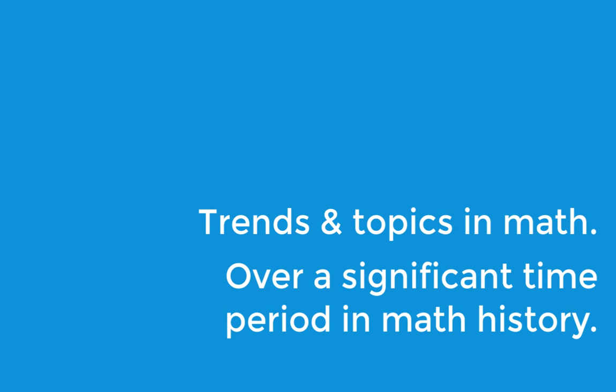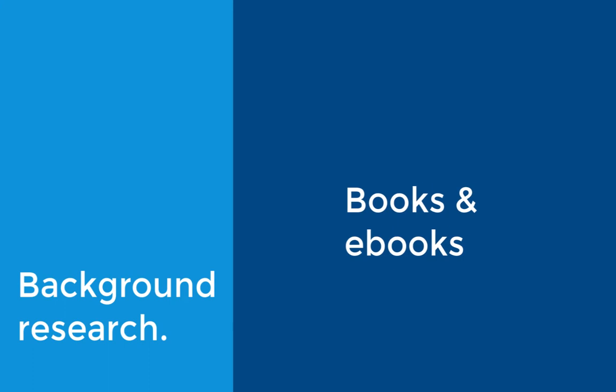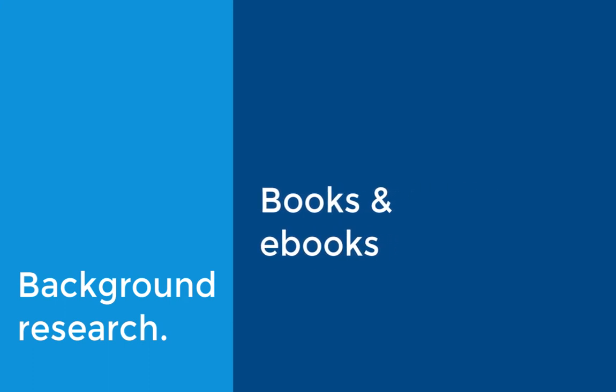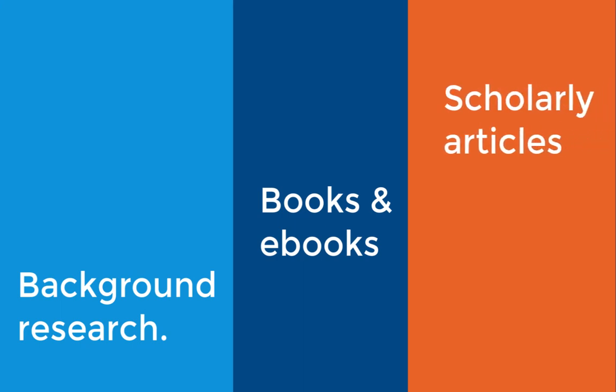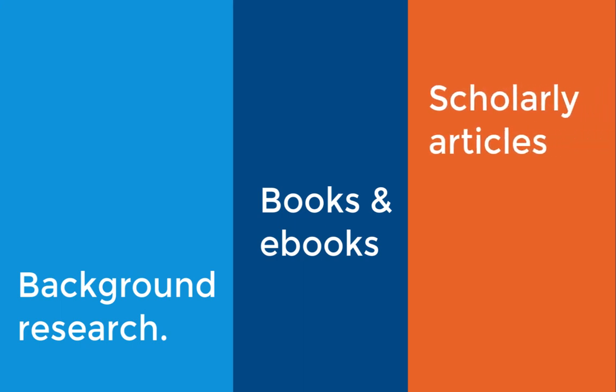There are three primary categories of research that we might explore for this topic. We could start with background research to get familiar with our topic or trend. Then we can move into finding potential book sources to see if anybody has published about this idea over its history. And then we can look specifically for some scholarly journal articles that can help us learn about what scholars have done with this particular topic or trend within the literature.